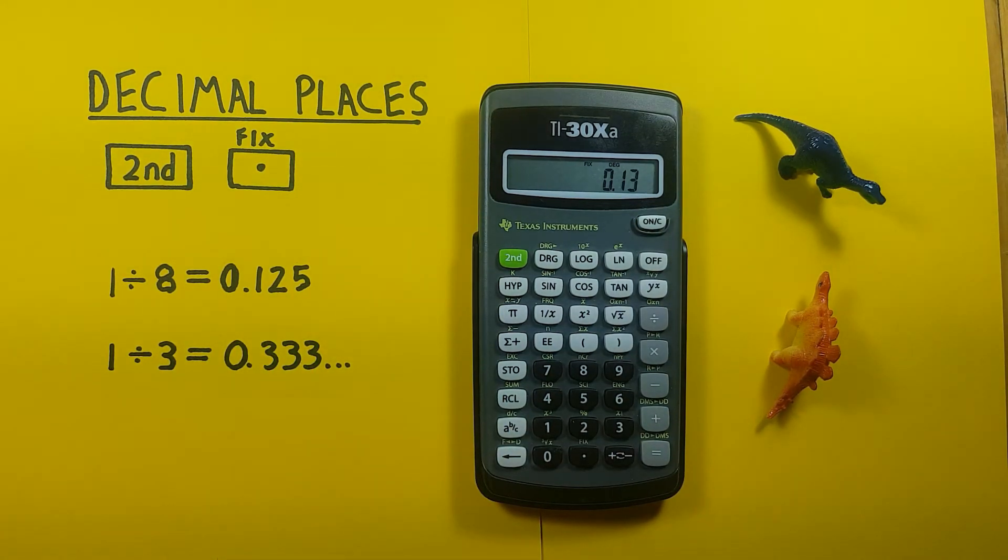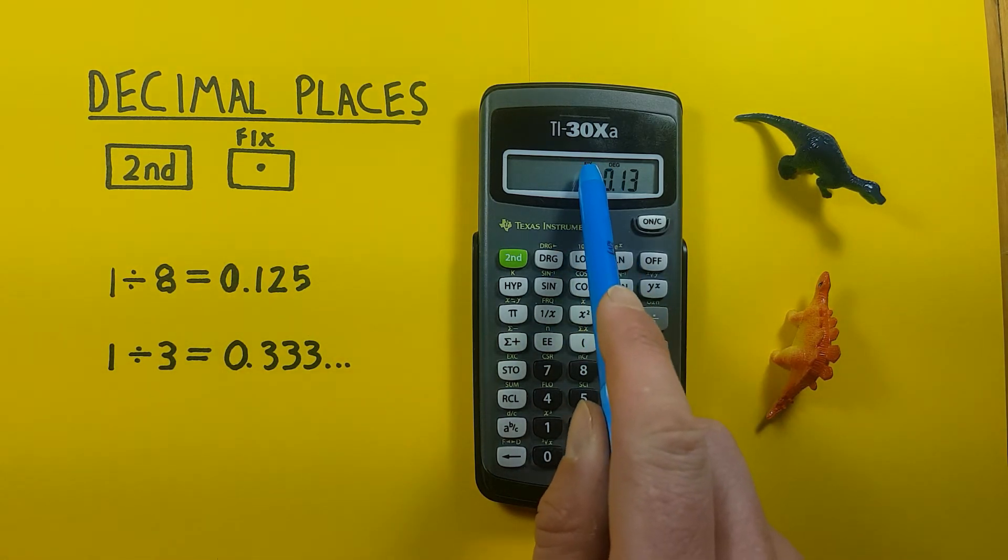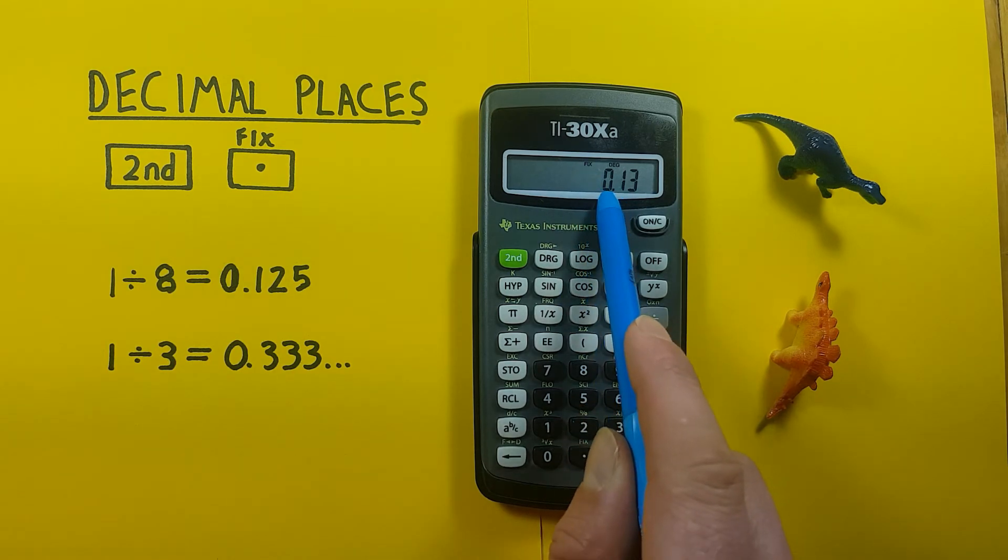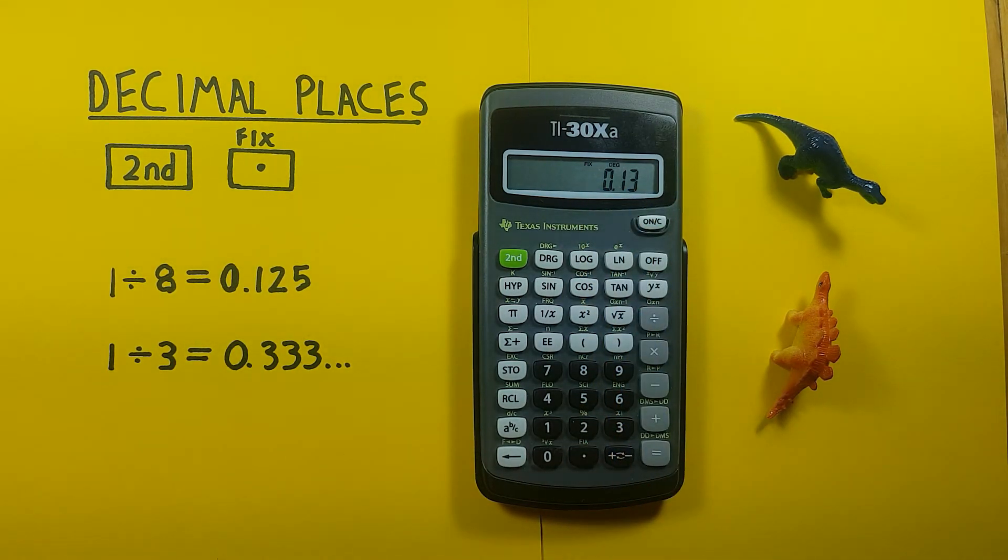You can tell when you're in fix mode because the word fix will appear on the top of your screen. So keep an eye out for that if you're getting a result that seems to be rounded or isn't quite what you expect it to be.